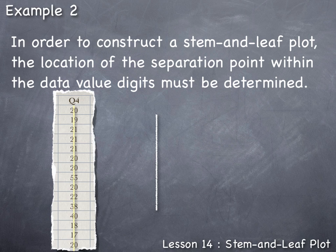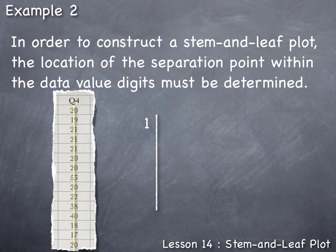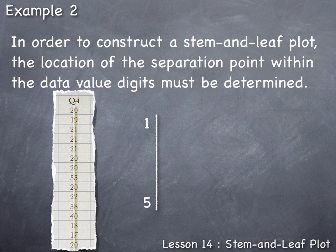The first stem in the stem and leaf plot always corresponds to the minimum data value. The youngest student was 17, so the first stem value is 1. The last stem value corresponds to the maximum — the oldest student was 53, so the last stem value is 5. Going from 1 to 5 one at a time gives us 5 stem values, which is neither too few nor too many, making this an acceptable choice.